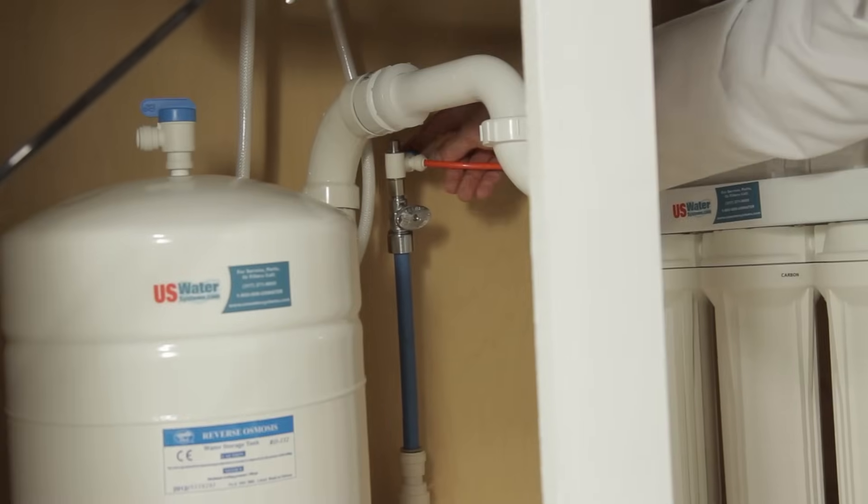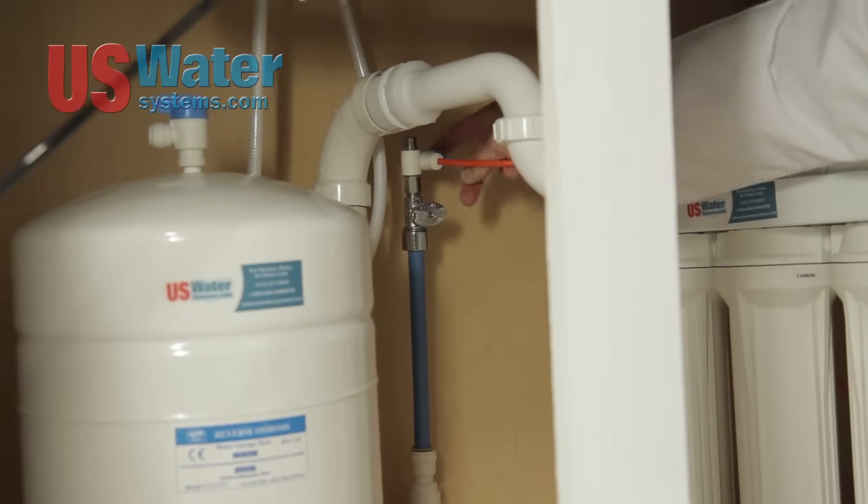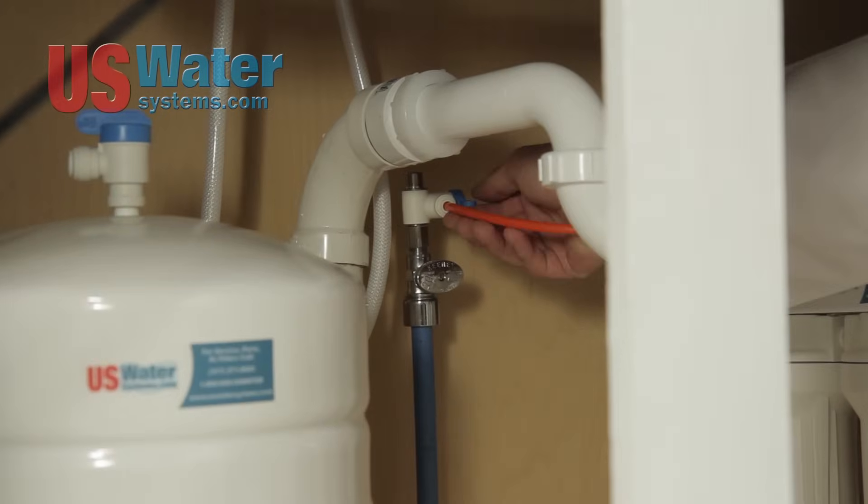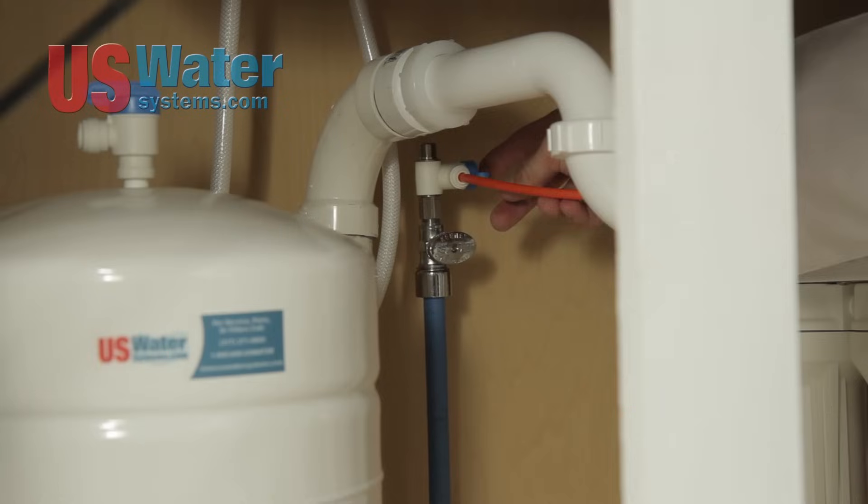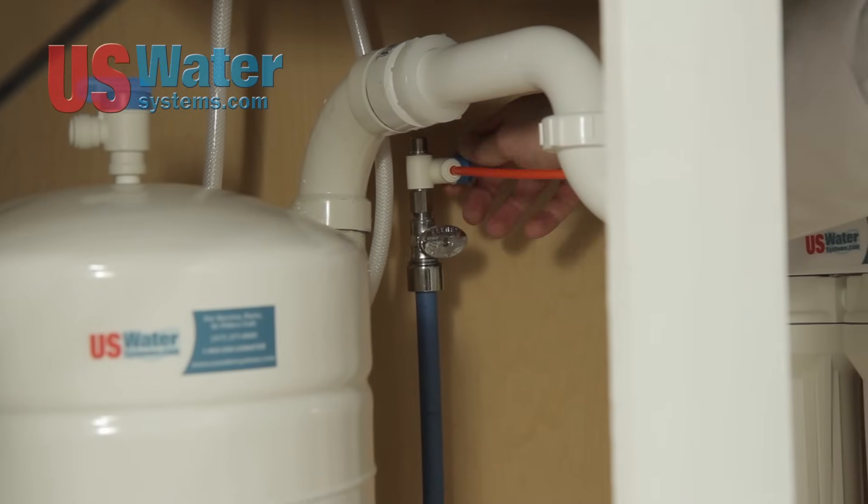First thing you want to do is shut your water off to the system. If you've got an angle stop valve, when the blue handle is in line with the line that means your water is on. So what you want to do is shut that off.